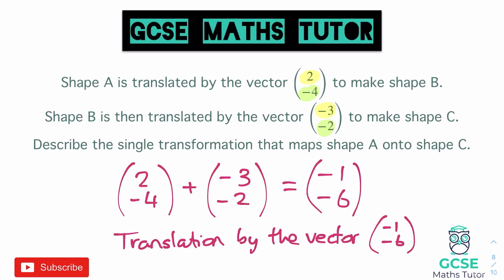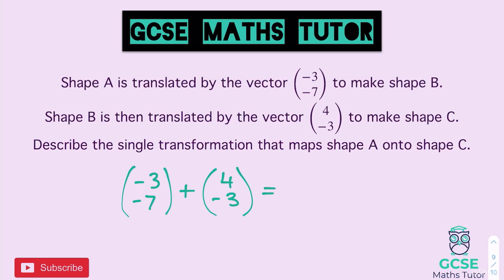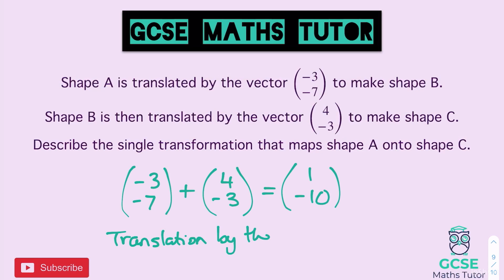Here's the final practice question — pause the video and have a go. We combine the vectors (-3, -7) and (4, -3): left three then right four gives a net movement of one to the right, and seven down plus three more down gives ten down overall. So the combined vector is (1, -10), and the full answer is: a translation by the vector (1, -10).